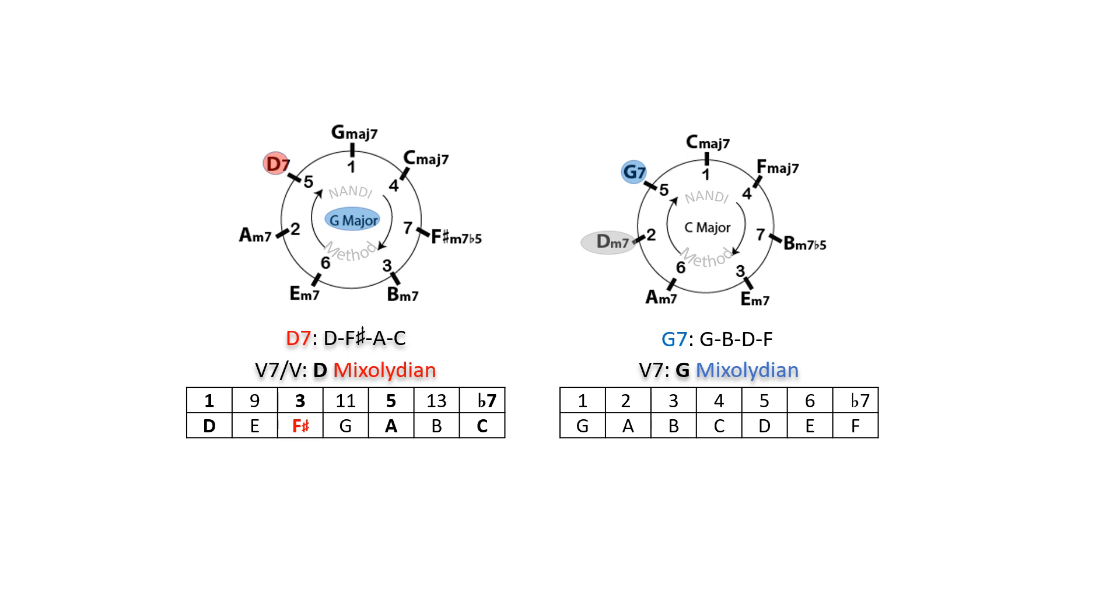D7, the 5-7 of G7, contains F sharp, a non-diatonic note in C major. While G mixolydian's fifth chord is D minor 7, in the parallel G major scale, D7 appears on the fifth degree and uses D mixolydian.